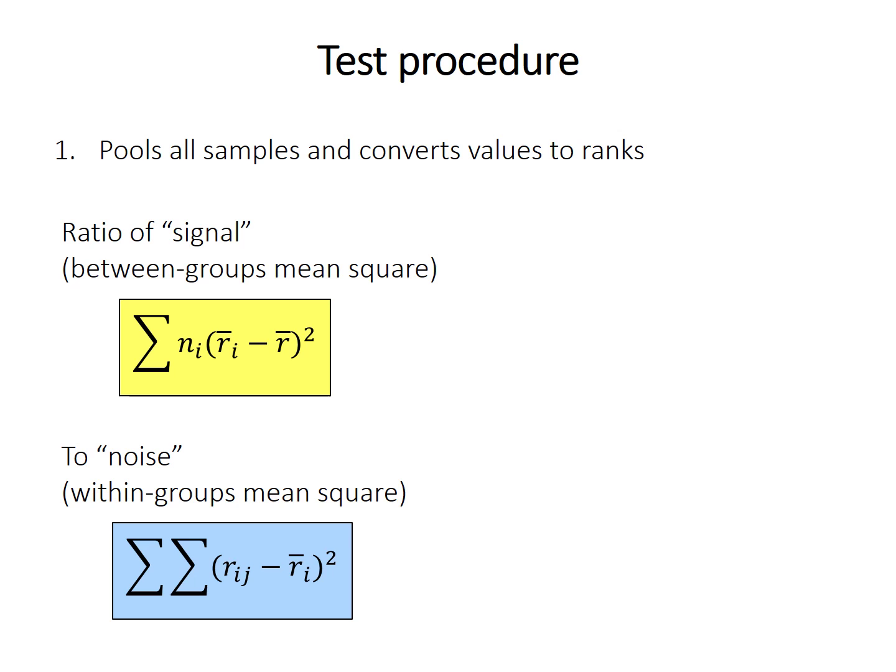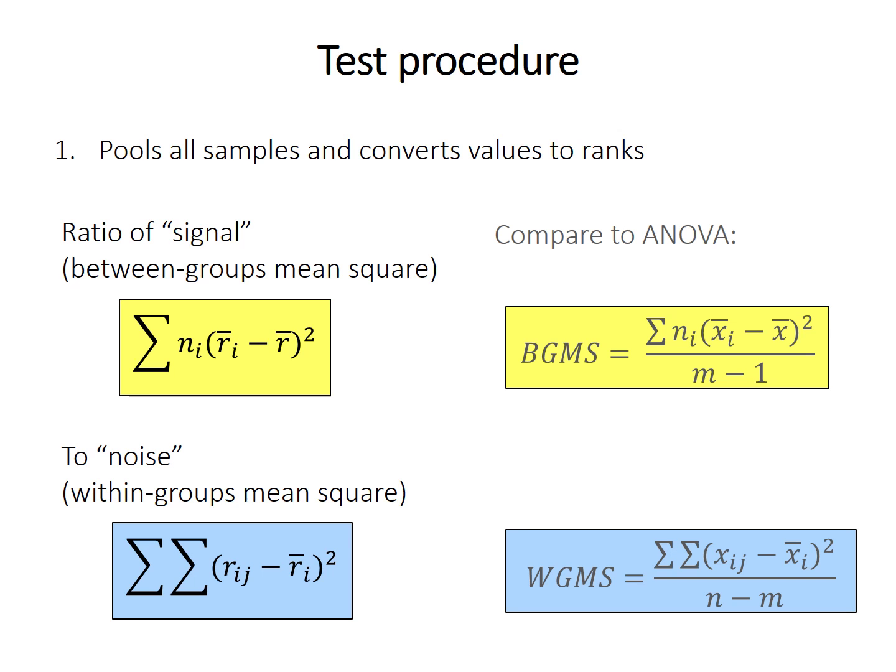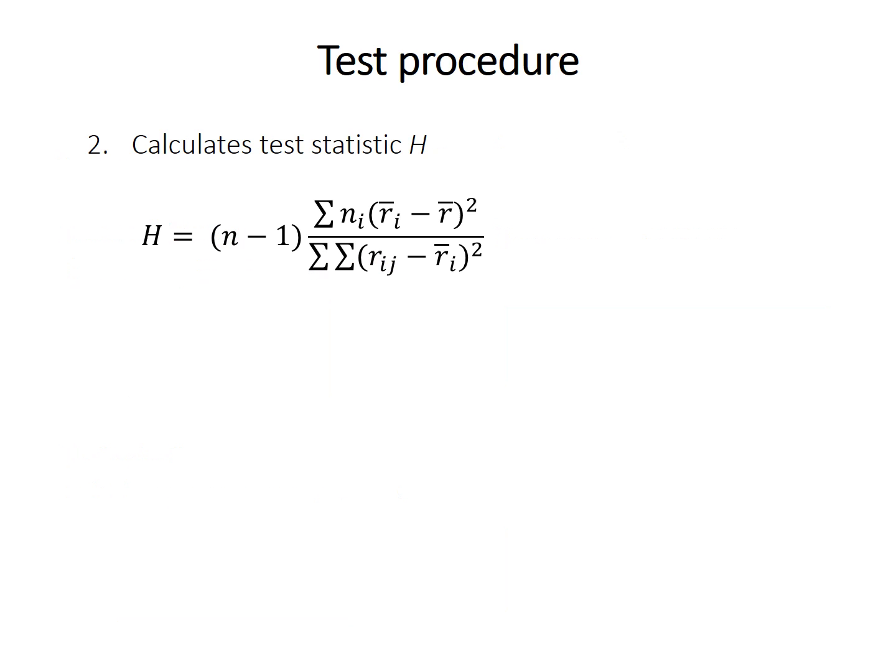With these formulas, if you compare them to ANOVA for the between-groups and within-groups mean square, you can see the similarities. We are just performing ANOVA here, but instead of the data, we are using the ranks. And like ANOVA, the test statistic — called H here — is the ratio of those two values.